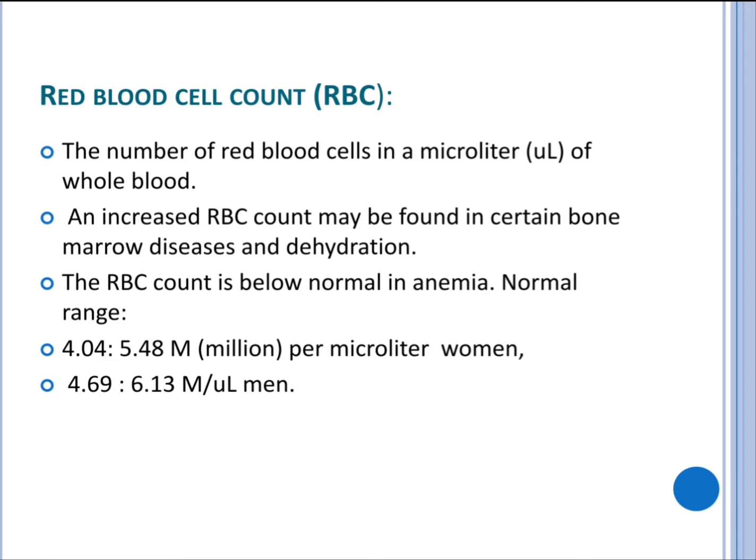The red blood cell count is the number of red blood cells in a microliter of whole blood. An increased red blood cell count may be found in certain bone marrow diseases and dehydration, while the count is below normal in anemia. The normal range of red blood cell count is 4.04 to 5.48 million per microliter in women.